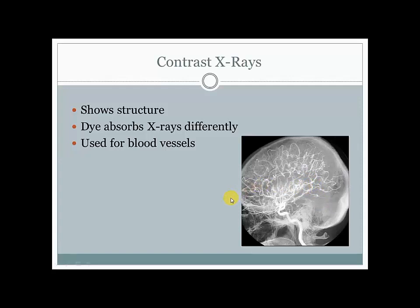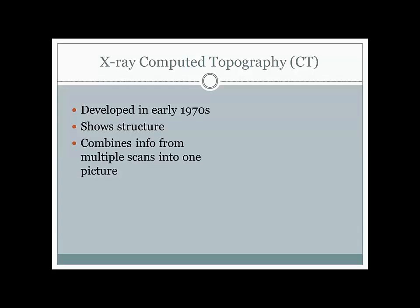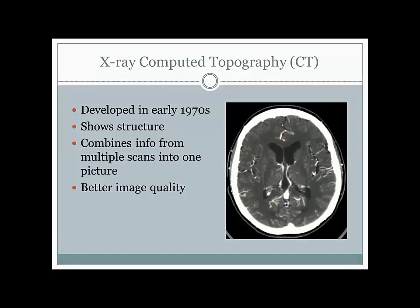The next major innovation in neuroimaging was the x-ray computed tomography scan, usually referred to as either the CT scan or CAT scan—it's the same thing. This came around in the early 1970s, and the nice part is you're able to see the actual structure of the brain. CT scans take a whole bunch of different x-rays, and then the computer compiles all that information into one picture with much sharper image quality. Once compiled, it might look something like this—a horizontal slice of the brain, as if looking down on top of the person's head.